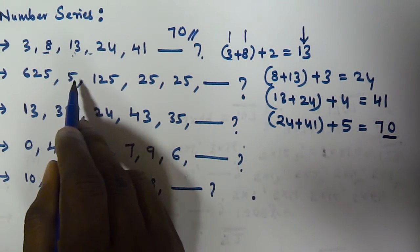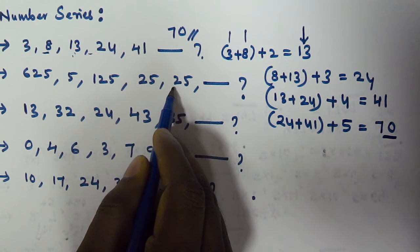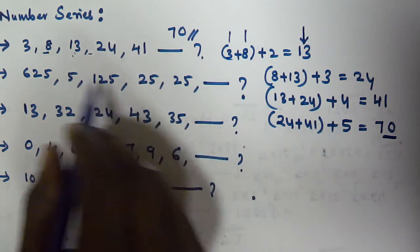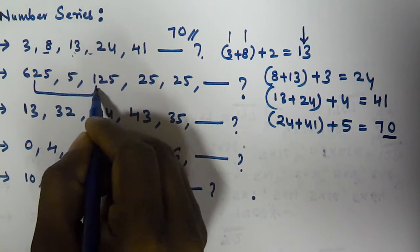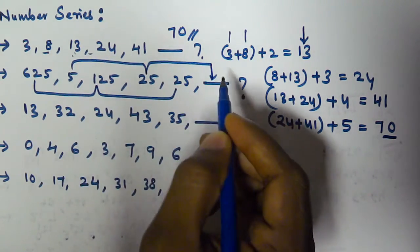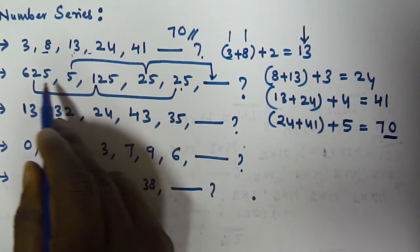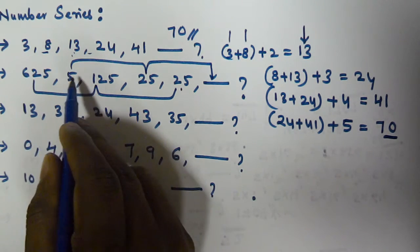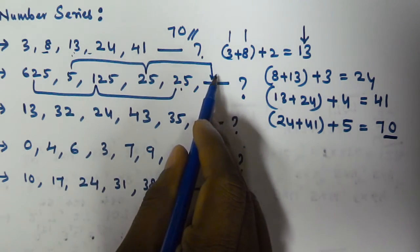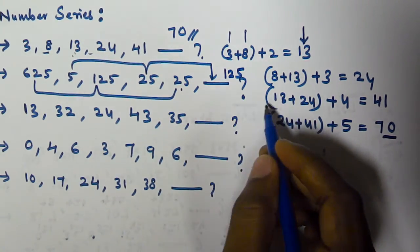The second series is: 625, 5, 125, 25, 25. If you observe, there are two interleaved series here. One series is 625, 125, 25, and the other is 5, 25. In the first series, 625 divided by 5 is 125, and 125 divided by 5 is 25. In the second series, 5 multiplied by 5 is 25, and 25 multiplied by 5 is 125. So the next number is 125.